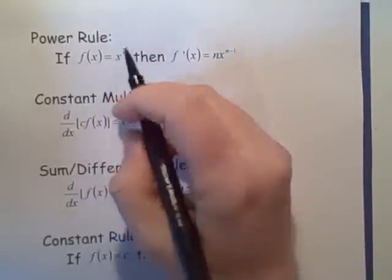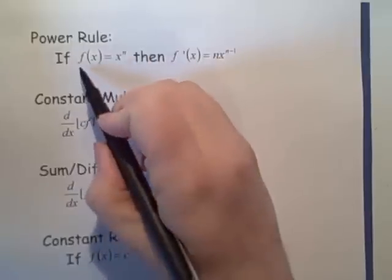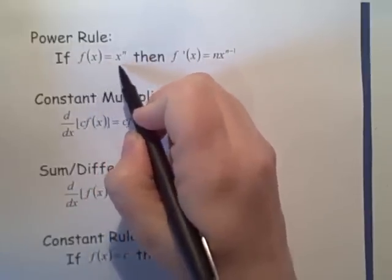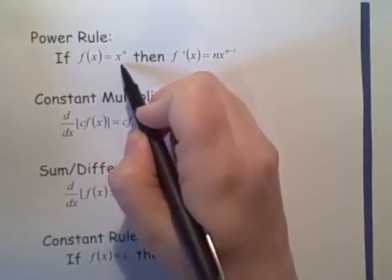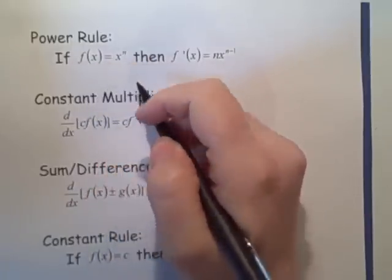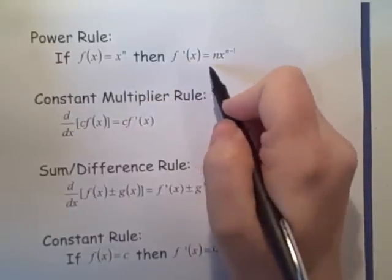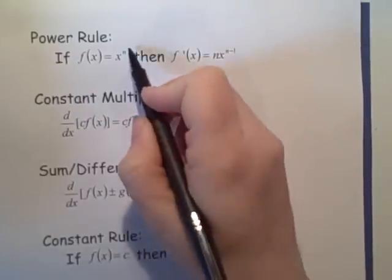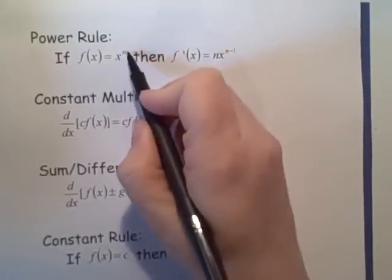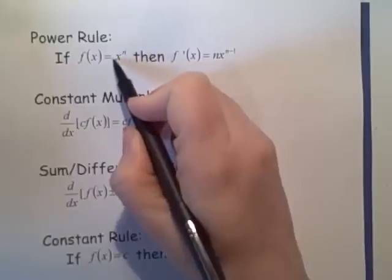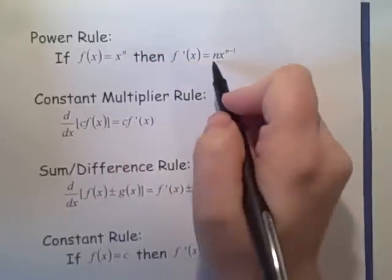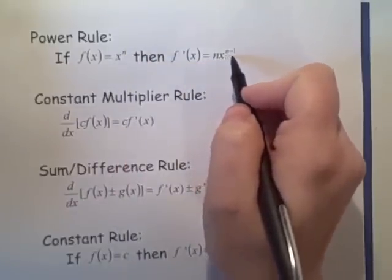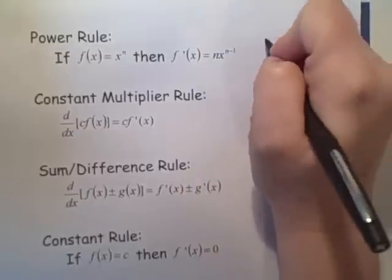First we have the power rule. This says that if f of x is just a power of x, then the derivative is equal to: you bring the power down in front and make it the coefficient — that's where we get this n — giving us x to the n minus one.